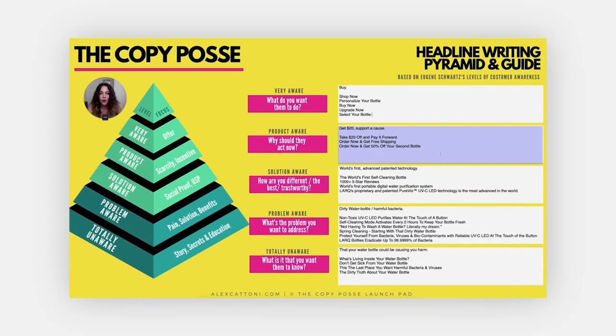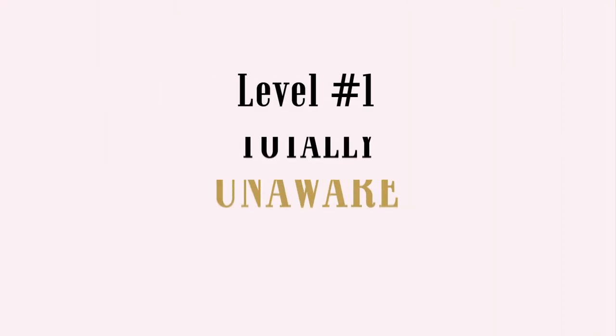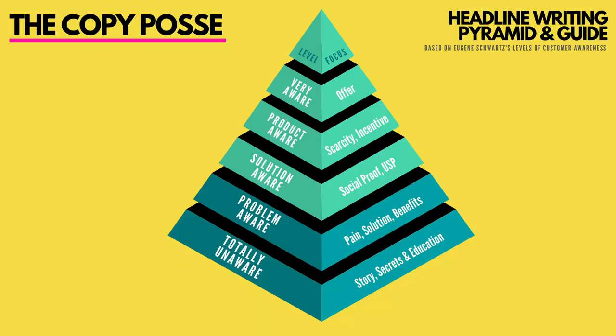Now let's explore the right way to write headlines at each level of customer awareness, and make sure to stick to the end of this video as I take you through my headline writing pyramid and guide. Starting with level number one: totally unaware. At this level, your prospect is not only completely unaware of you and your product, but they have no clue that they even have the problem that you're helping solve. Video, banner, and native ads with broad targeting often speak to this type of audience. You want to grab attention quickly with a powerful hook and then help your audience diagnose a problem they don't know they have. This is often done through story, secrets, or education — think quizzes, science content marketing, or any copy with a more indirect sales approach.